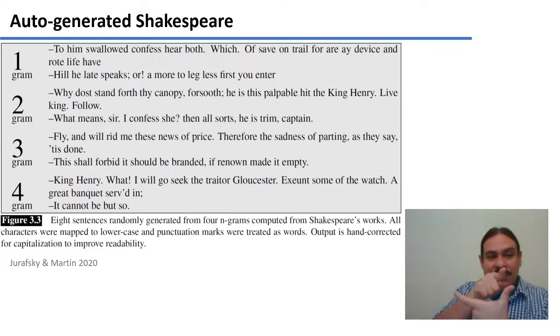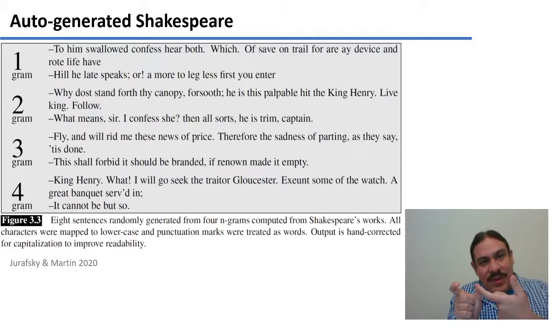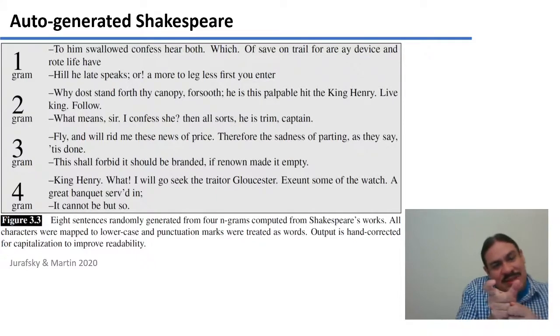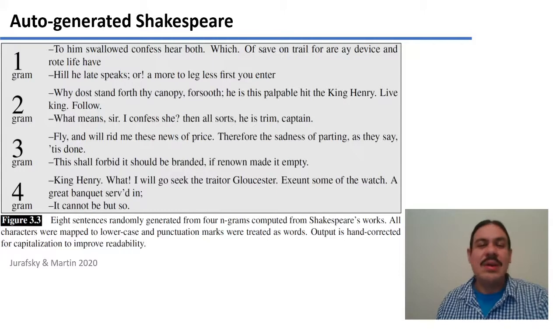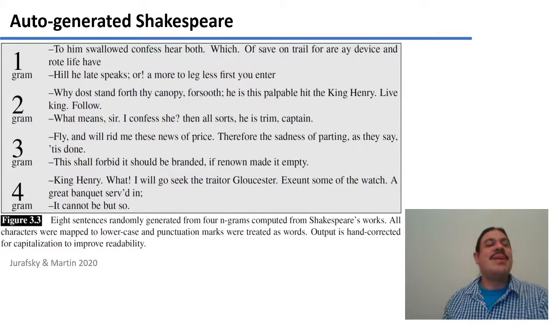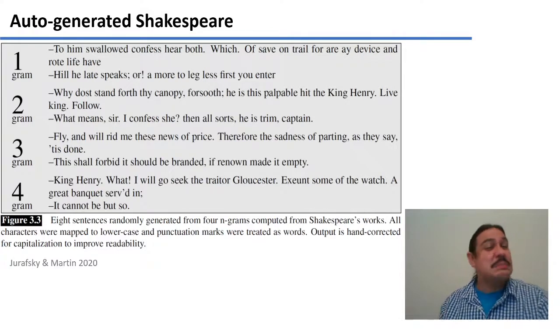Trigrams would be chains where you have one, two, three elements, and then the last two elements become the first two elements of the following trigram. And once you've chained that one, the last two elements of that trigram become the next two elements of the following trigram. Using this kind of chaining, the trigram says, fly and will rid me these news of price. Therefore the sadness of parting, as they say, 'tis done. That sounds a little bit more like English. It's starting to sound like it.